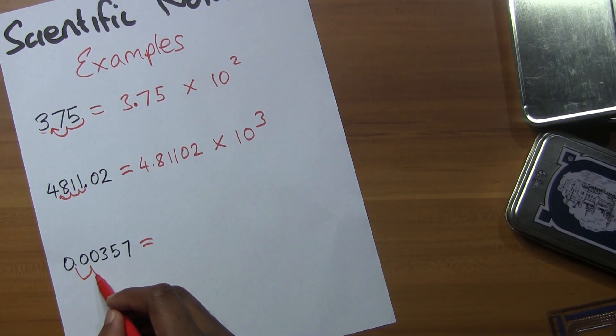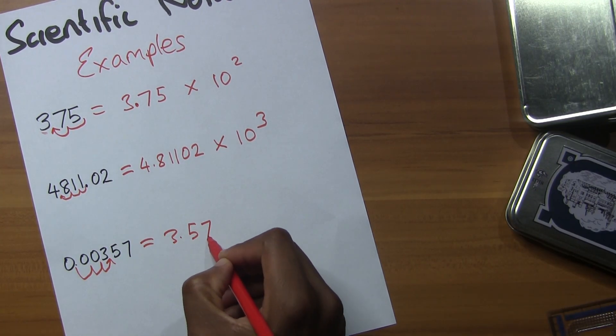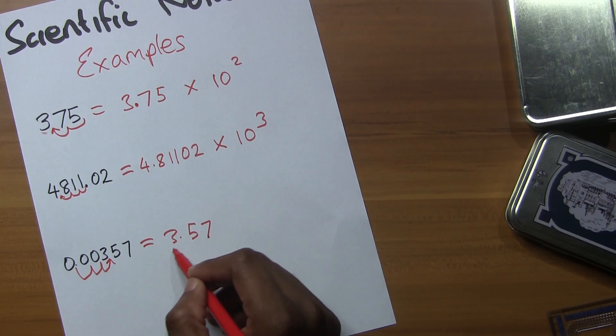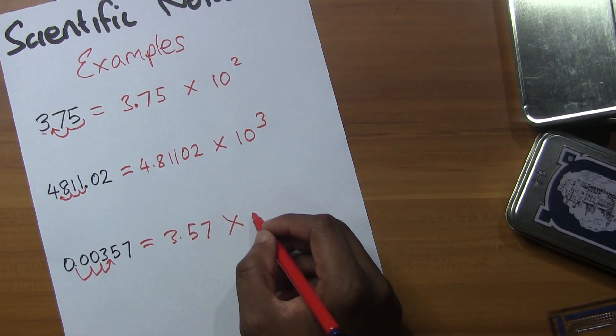This one is a little different: 0.00357. I'm moving the decimal point in the other direction, so it becomes 3.57 - I got it between 1 and 10. And since I moved the decimal point this way, the exponent is gonna be negative: 3.57 × 10⁻³.